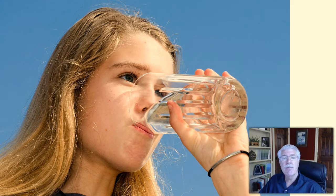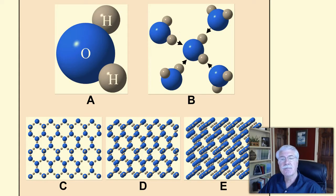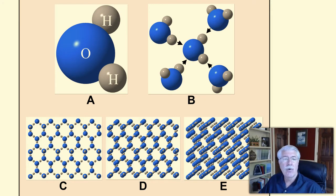Water is made up of molecules that have two hydrogen atoms and one oxygen atom joined together. That's why we also call water H2O. Water can take three forms on earth: liquid, solid — which is ice — and gas, which is vapor. Water exists in all three forms on earth.